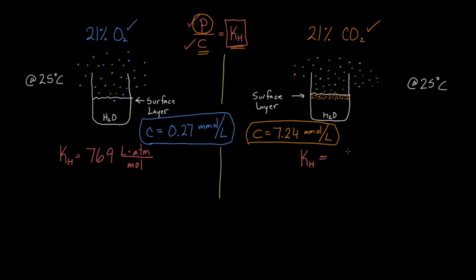The k sub h on this side is going to be lower. It's 29 liters times atmospheres divided by moles. So it's a much lower number. And I don't want you to get so distracted by this bit. This is kind of irrelevant to what we're talking about. It's just the units. And we can change the units to whatever we want. But it's this part. It's the fact that the number itself on the carbon dioxide side is lower.